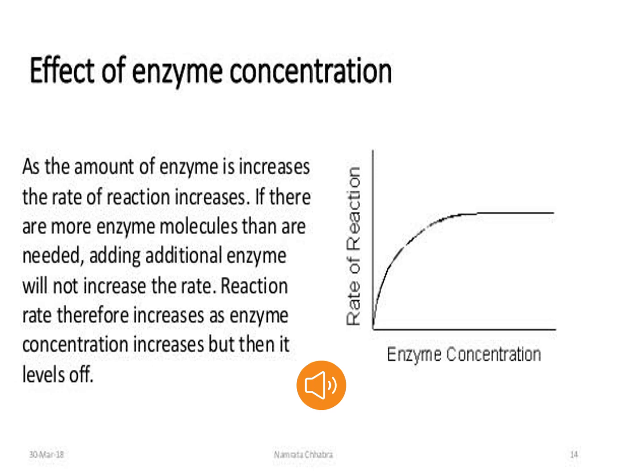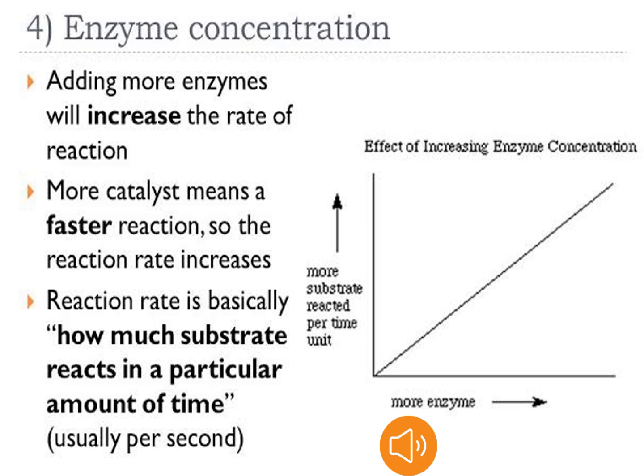Reaction rate increases as enzyme concentration increases, but then it levels off. You can see on the graph shown here that at a certain limit, the rate increases, but then it equilibrates. Adding more enzyme will increase the rate of reaction — more catalyst means a faster reaction. Reaction rate is basically how much substrate reacts in a particular amount of time, usually per second.